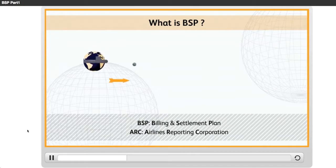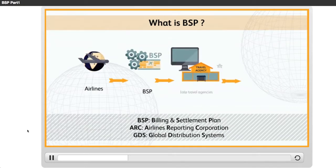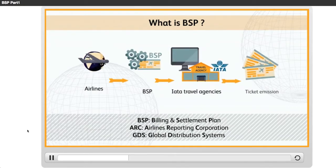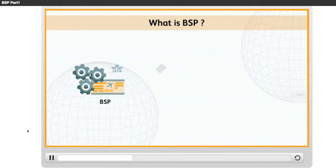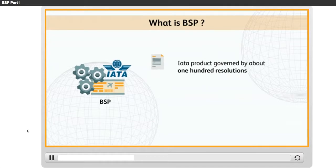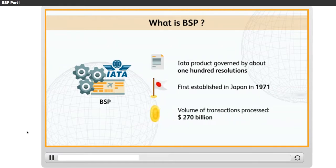BSP enables ticket emission through GDS for members only. It is an IATA product governed by about 100 resolutions. BSP has 45 years of existence since it was first established in Japan in 1971, and its annual volume of transactions processed is 270 billion.